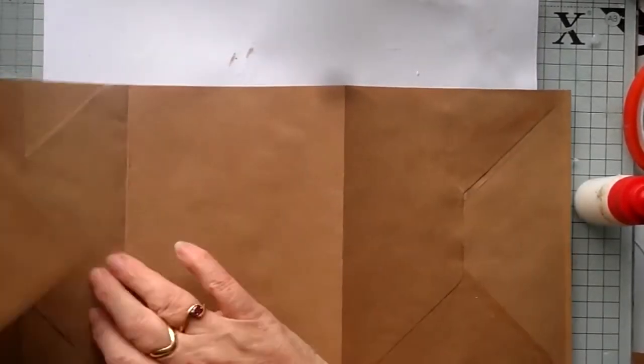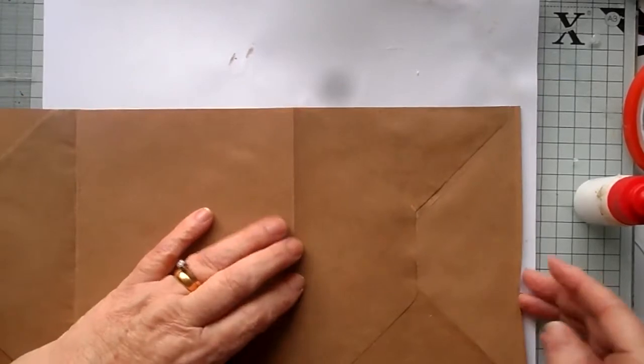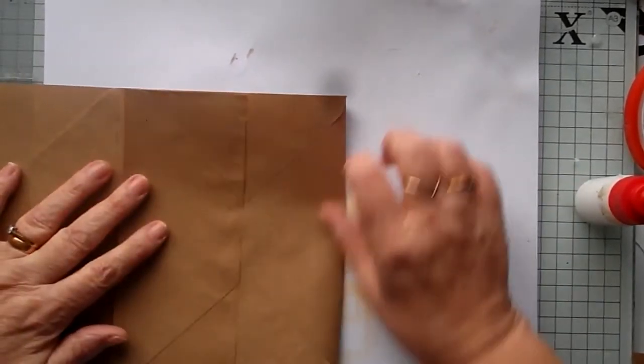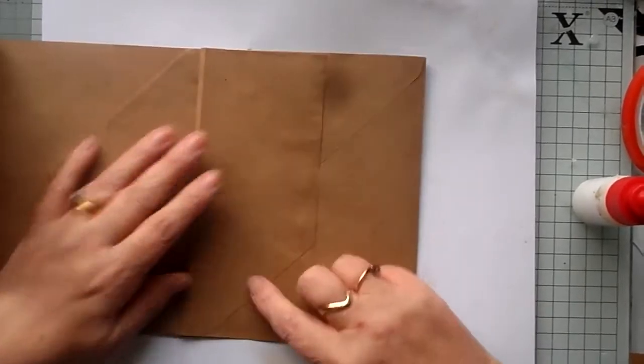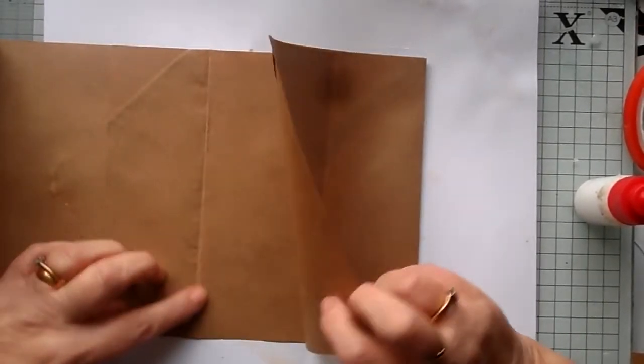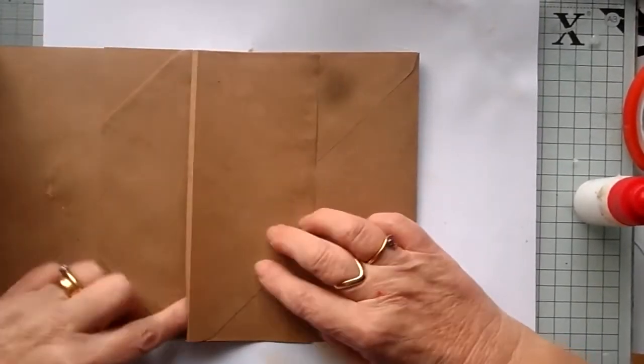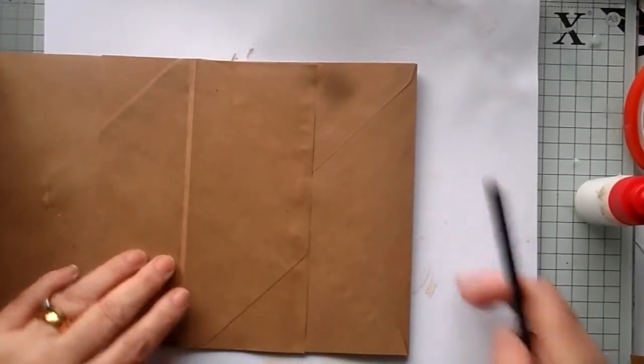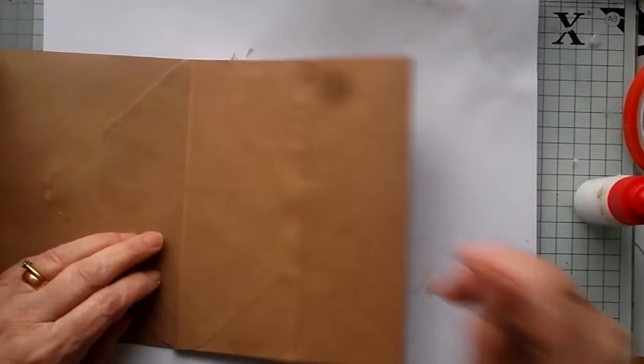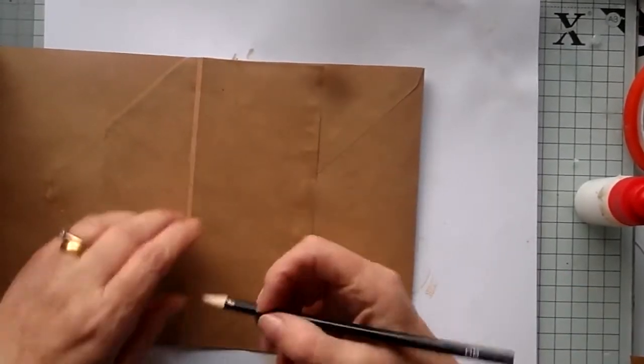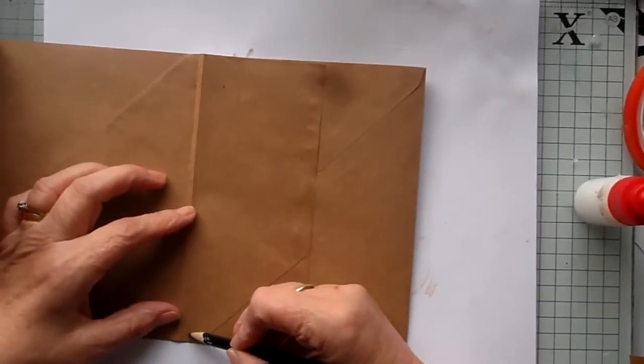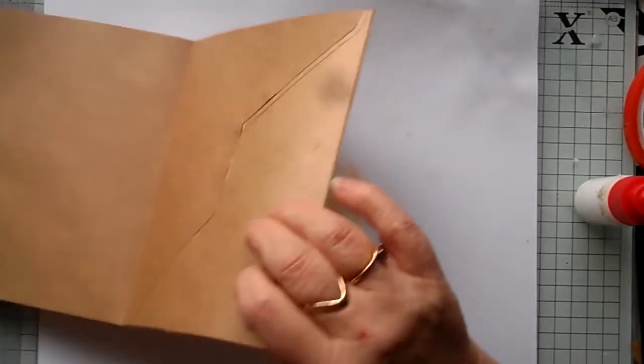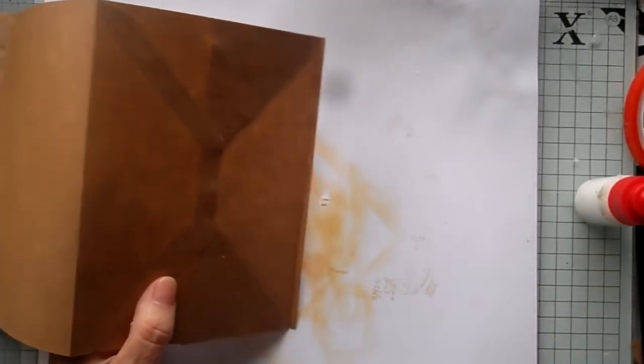Now when we fold the envelope up we're going to be having that going into there. Now if you can see here it's gone over the line. So we're going to want to trim some of that off because it's going to be excess. And when we fold that over again it's going to bend. So what I'm going to do is just trim off to about there I think. And see if that's about the right length.